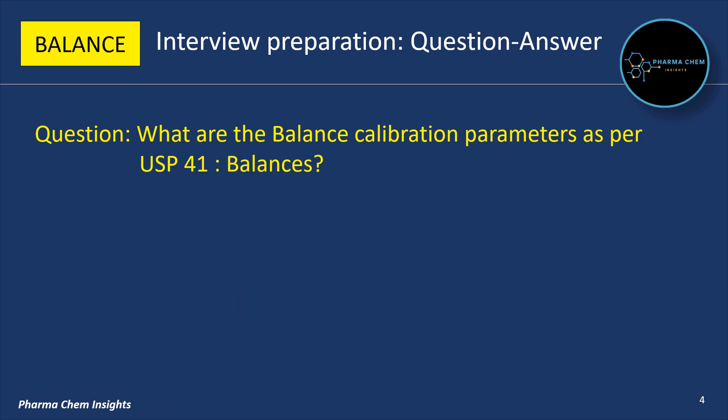Next question: what are the balance calibration parameters as per USP 41 Balances? The balance calibration parameters as per USP 41 are: first, repeatability; second, accuracy.